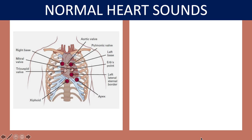On screen you have five different points to remember. The first is the right base, where my mouse is pointing. Point number two is found in the second intercostal space on the left side of the sternum. Remember, this is the left side of the patient and this is the right side. The first point is on the right medial side of the sternum, and the second base is found on the left — in the second intercostal space but on the left side.